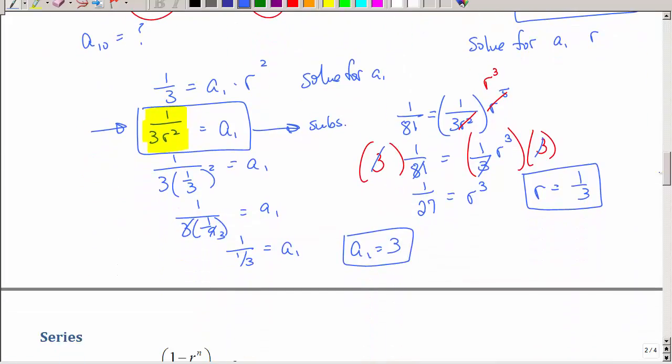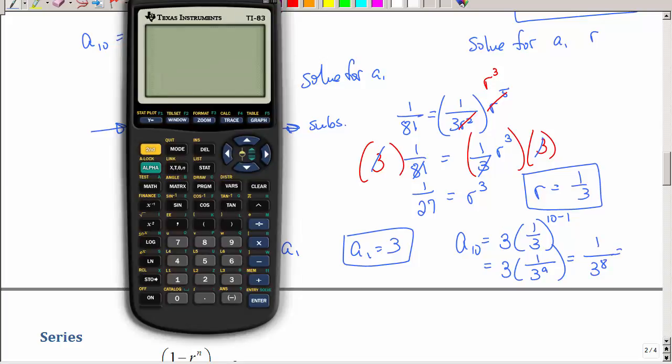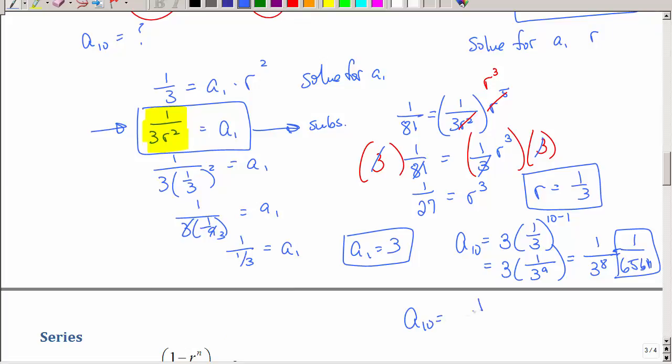Well, the tenth term is a1 times r to the 10 minus 1 power. So, that's 3 times 1 over 3 to the ninth power. Which is 1 over 3 to the eighth power. Just reducing. So, 3 to the eighth power is 6,561. So, the tenth term is 1 divided by 6,561.